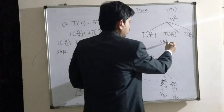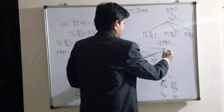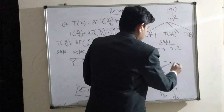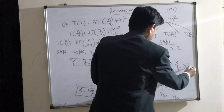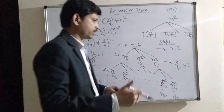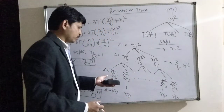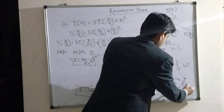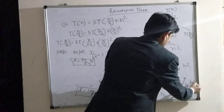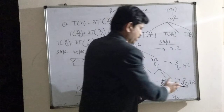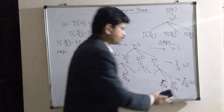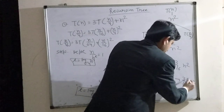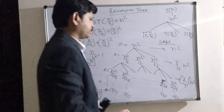We find the cost of each level. At level 0, the cost is n². At level 1, the cost is 3·n²/16. The cost is decreasing at each successive level. At level 2, the cost is 9·n²/256, which can be written as (3/16)²·n². And so on.